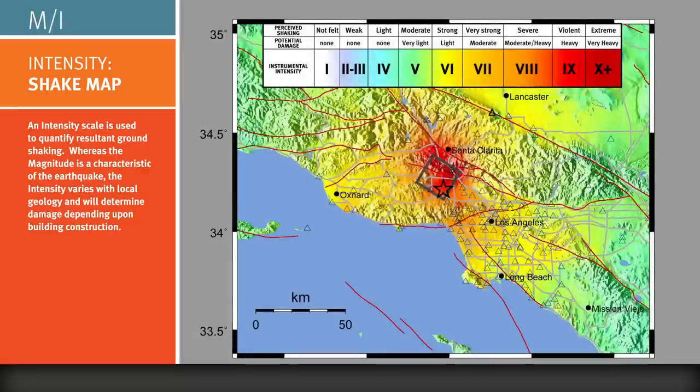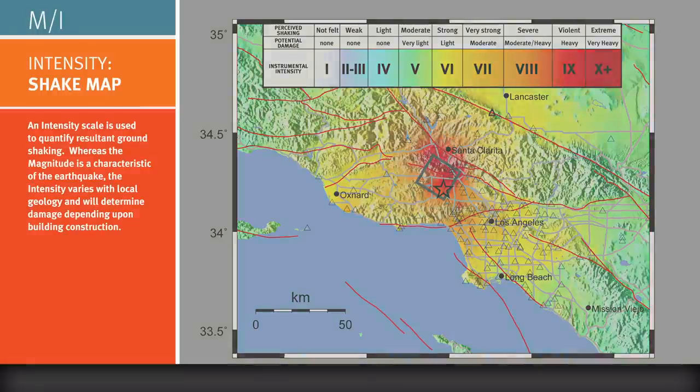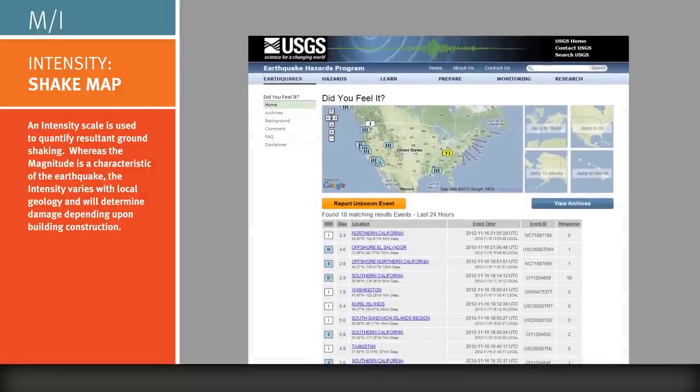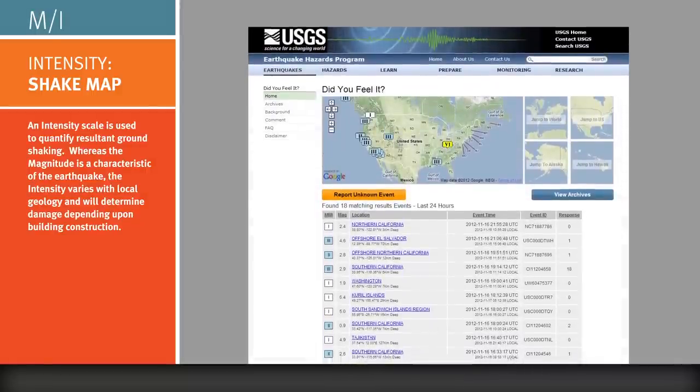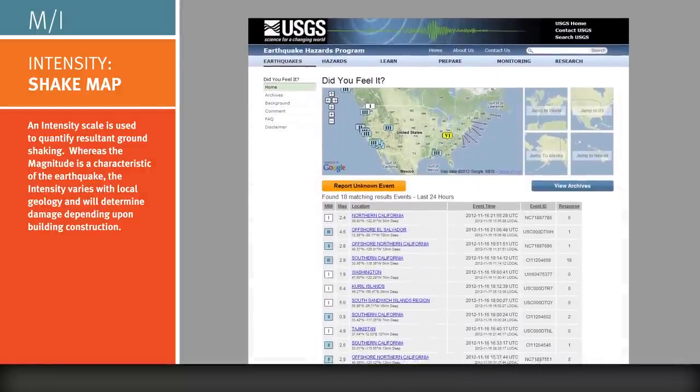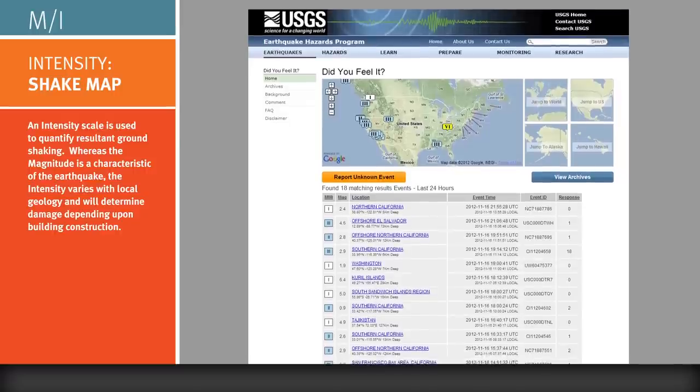This is the shake map for the magnitude 6.7 Northridge earthquake, which occurred on January 17, 1994. The areas that experienced strongest shaking are in warm colors, like red, versus areas of mild shaking in cooler colors, like blue and green. Ground shaking recorded by seismic sensors is used to make the shake map. We can also make subjective intensity maps, based on reports from local people from each area through online resources, like the Did You Feel It? USGS webpage.